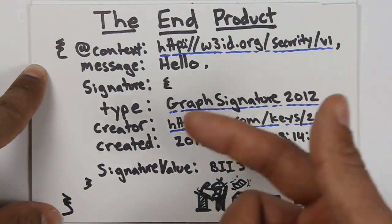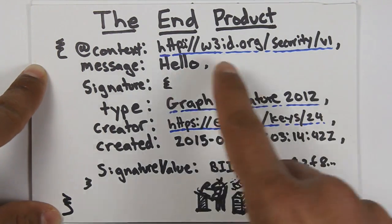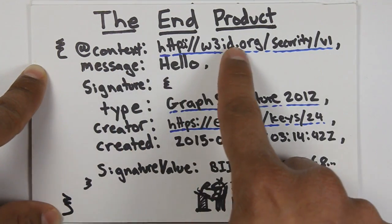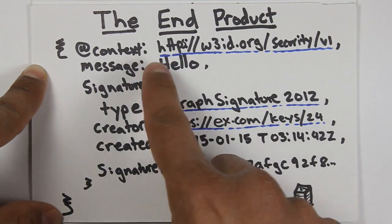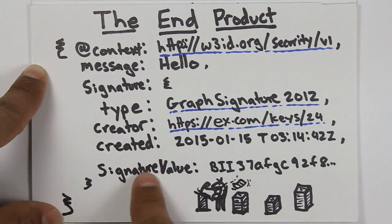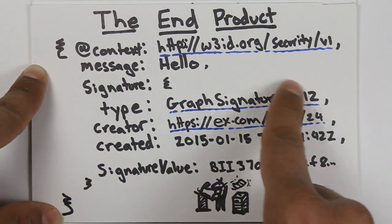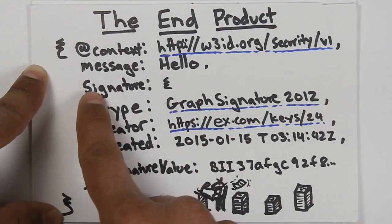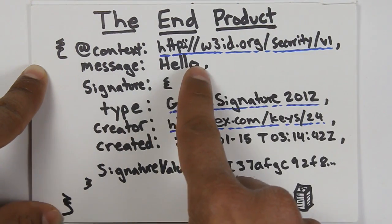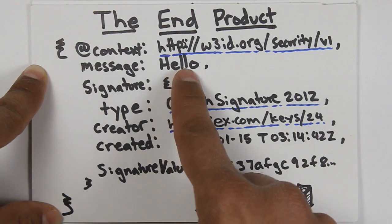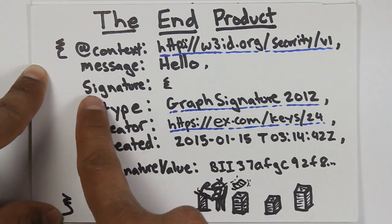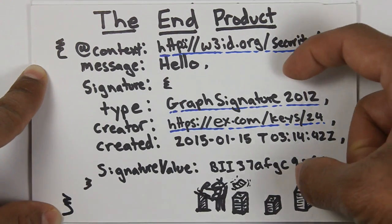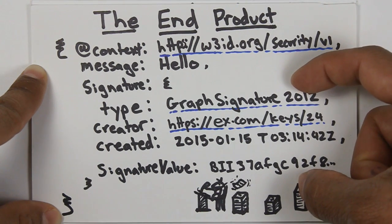You want to send a hello message from one side of the world to the other. What we have up here at the top is a standard JSON-LD context. It has an explanation of what these terms over here mean, as well as some of the terms on the right-hand side here. We have the message itself, which is what we're sending. And then we have the signature. This chunk right here is a linked data signature.